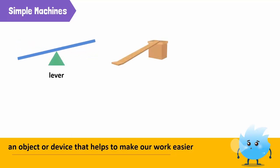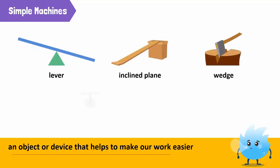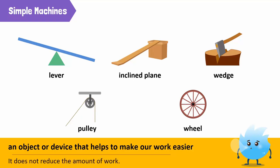A lever, an inclined plane, a wedge, a pulley, and a wheel are all examples of simple machines. A simple machine does not reduce the amount of work but enables us to do our work more easily.